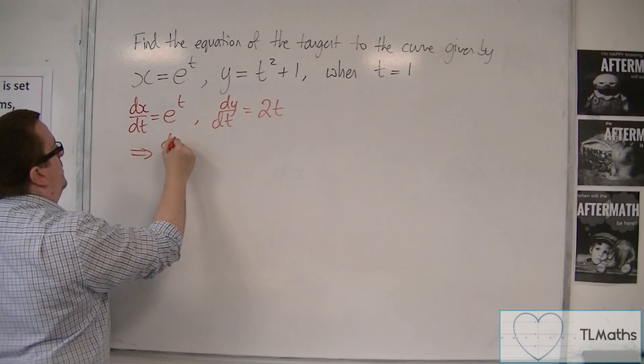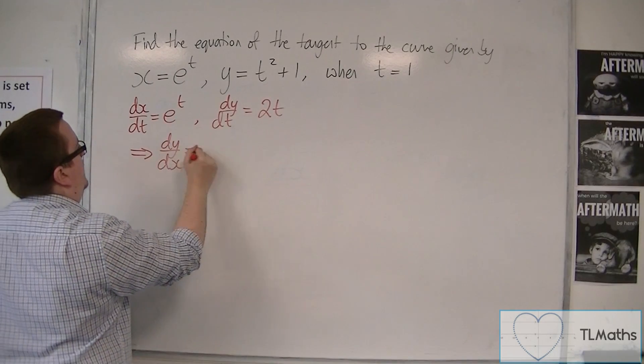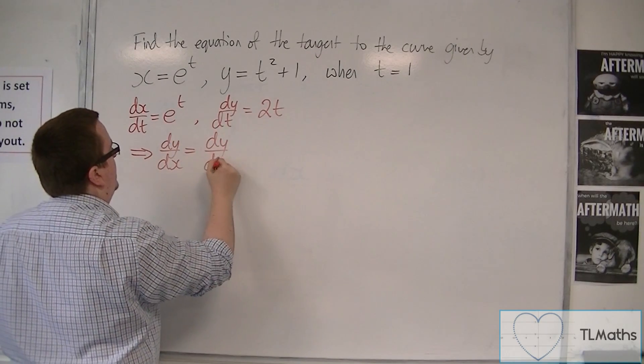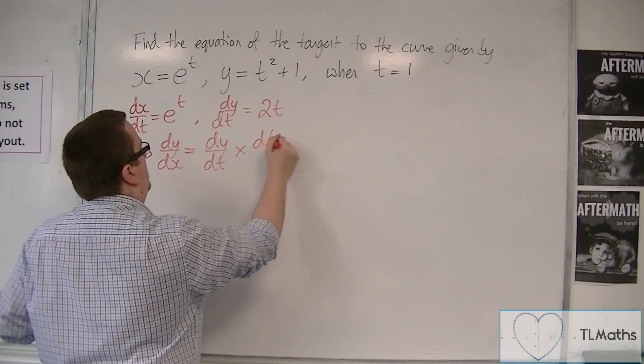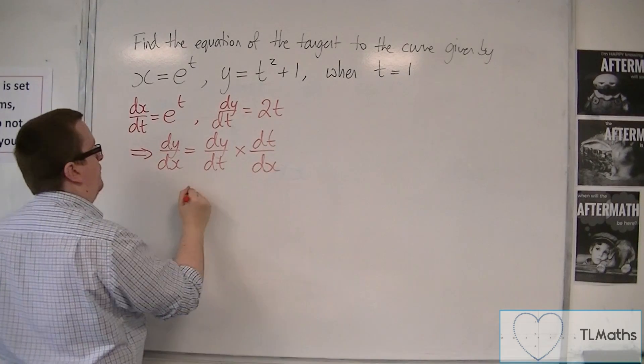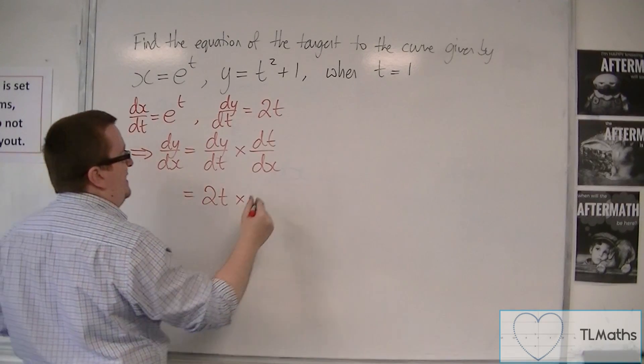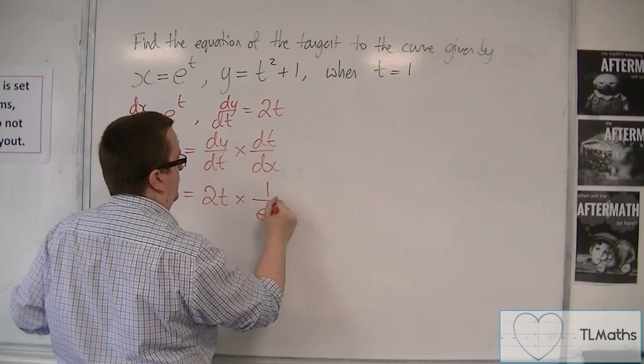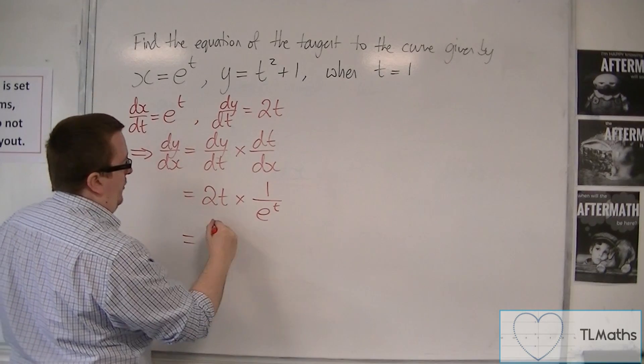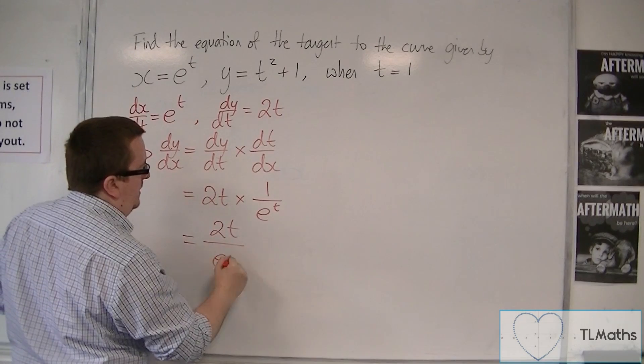So dy by dx is equal to dy by dt times by dt by dx, using the chain rule. So we have 2t times 1 over e to the t. So we've got 2t over e to the t.